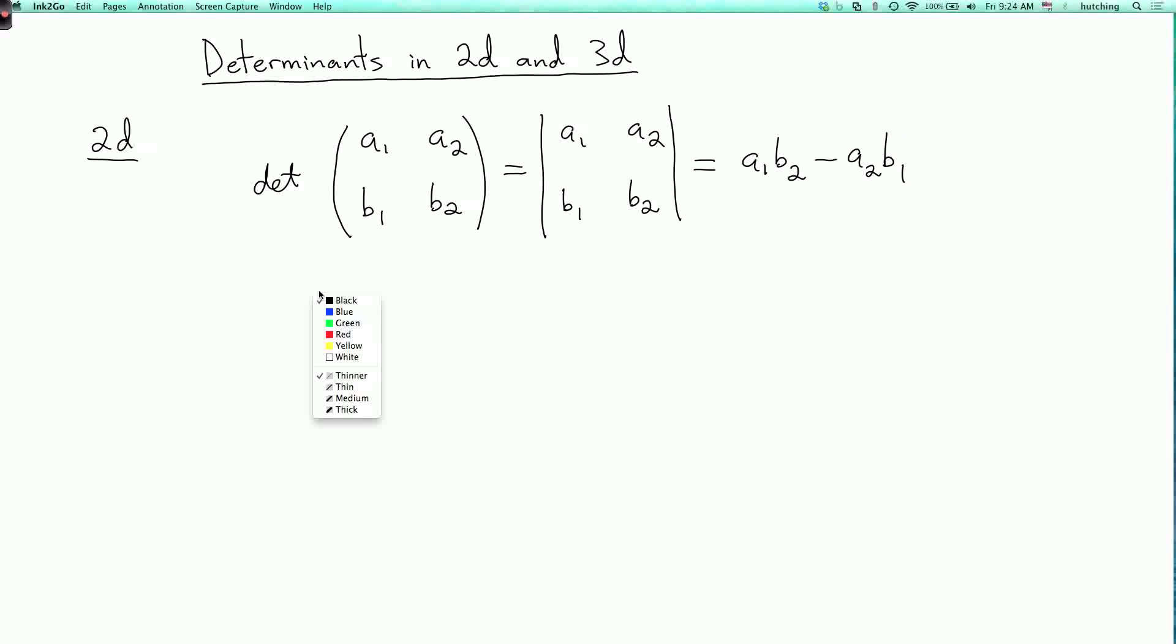A way to remember this is you take the product of the two numbers on this diagonal, a1 times b2, and then you subtract the product of the two numbers on the other diagonal.